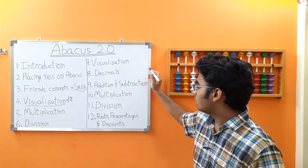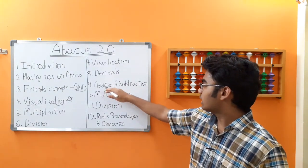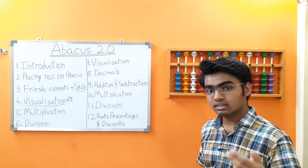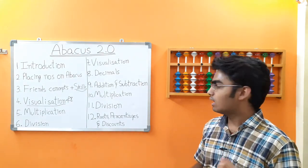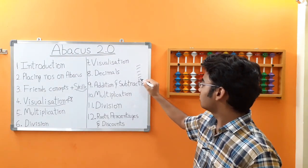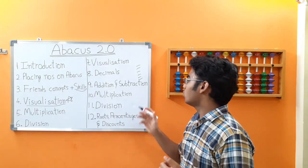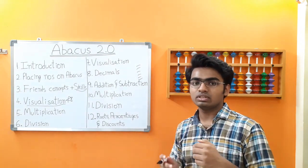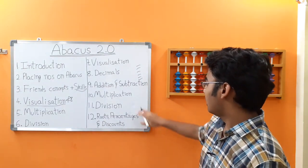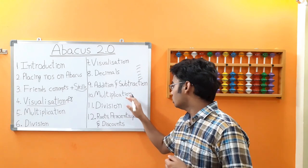In the advanced addition and subtraction module, we are going to have big sums — for example, six-digit and seven-digit sums with up to 20 rows. We are also going to have zigzag sums which include a variety of all the friends concepts.